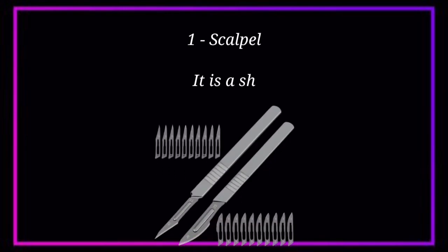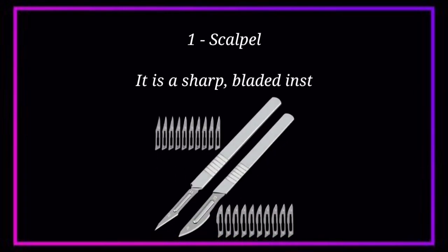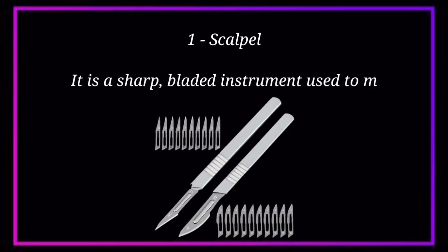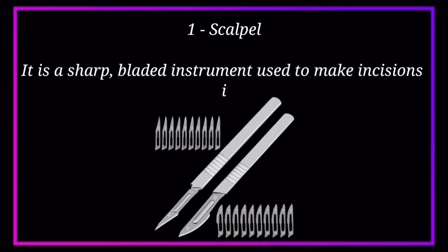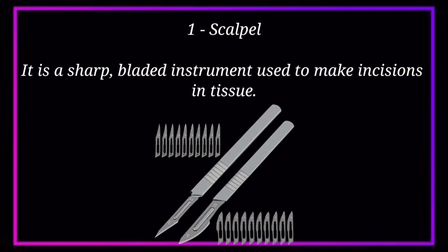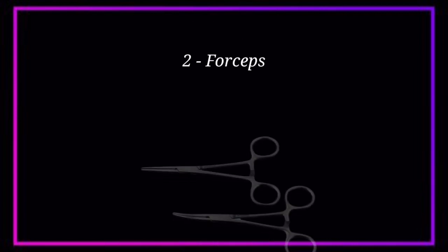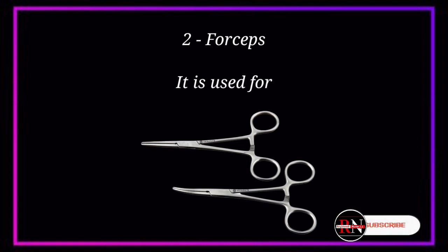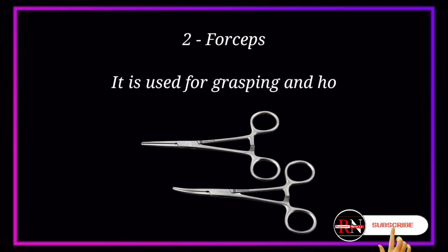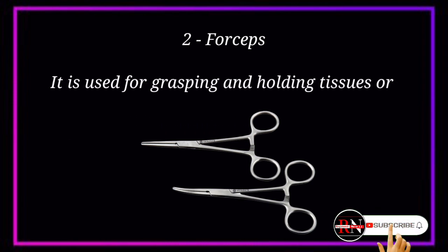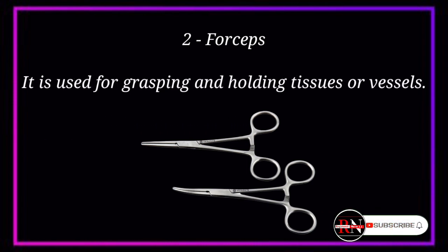Number 1. Scalpel. It is a sharp, bladed instrument used to make incisions in tissue. Number 2. Forceps. It is used for grasping and holding tissues or vessels.